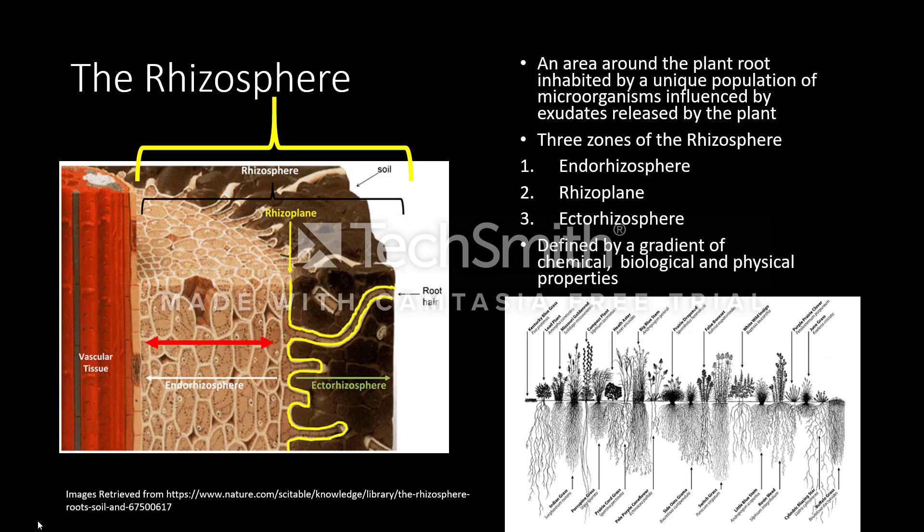The endorhizosphere, found in the inner section of plant roots, is composed of the cortex and endodermis. Microorganisms and cations often occupy the space in between cells. Next, we have the rhizoplane, the zone directly adjacent to roots. It includes the root epidermis and mucilage.